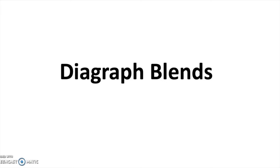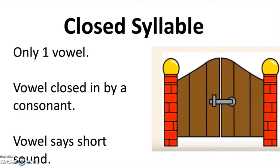Today we're going to use some concepts that we already know — both diagraphs and blends — to read diagraph blends, even harder words. Just to review, a closed syllable has only one vowel, and that vowel is closed in by a consonant so that the vowel says a short sound.